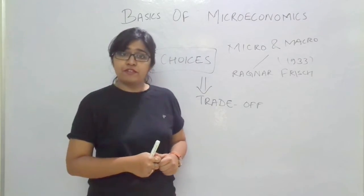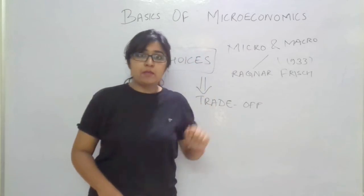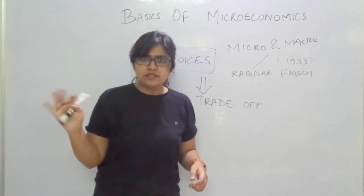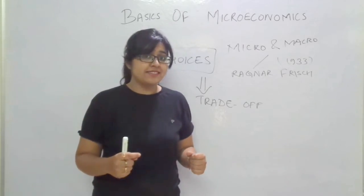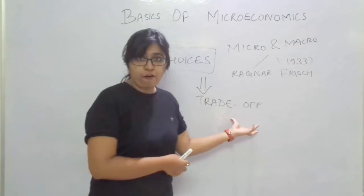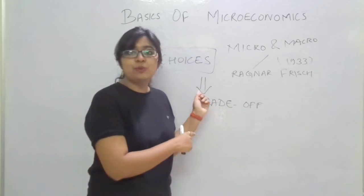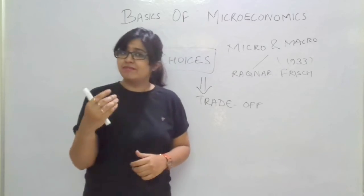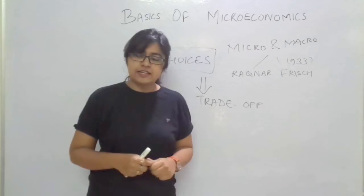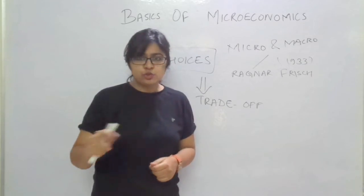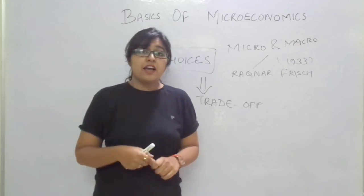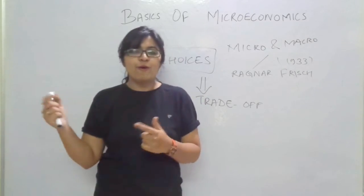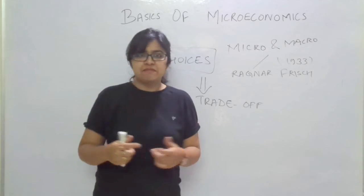What exactly is this trade-off? We implied from the problem of scarcity that resources are limited in nature and human wants are unlimited. So how do we compromise? We trade-off between two things, and that is how we choose economically. A simple example for school and college students: on a Saturday, if school is running, you face a trade-off between going to school or going to a mall.